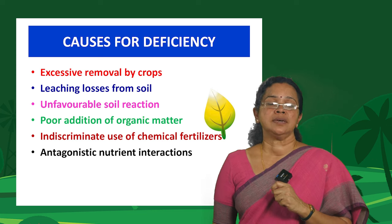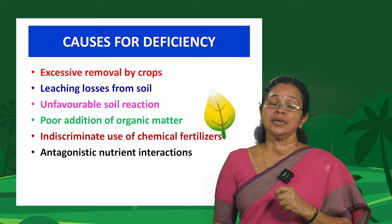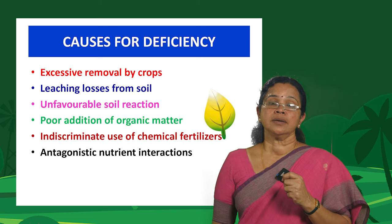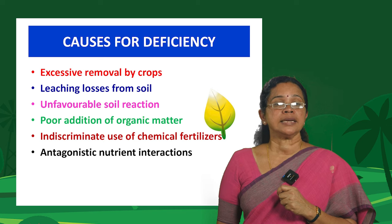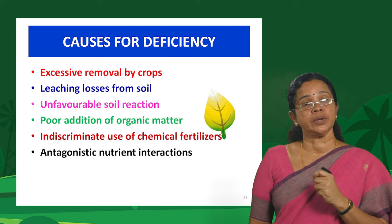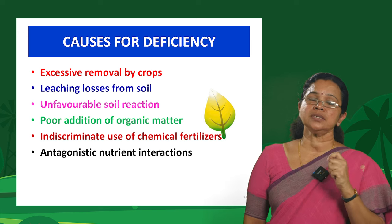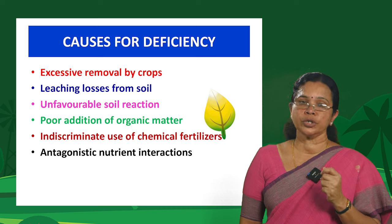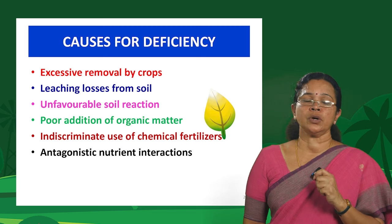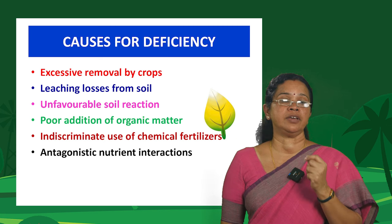The second cause is leaching losses from the soil. Our country is located in a tropical region, so we encounter torrential rains. Along with rainwater, the soil moves through water erosion and nutrients are lost from the soil. Third is unfavorable soil reaction — we have seen how soil pH affects the availability of nutrients. Fourth is poor addition of organic matter. Organic matter is what gives life to the soil — soil is truly the soul of infinite life.